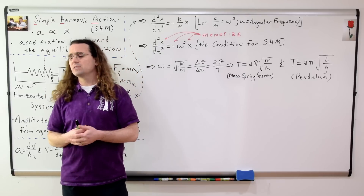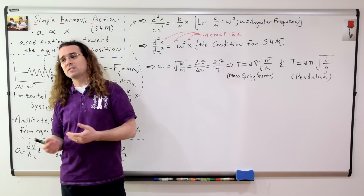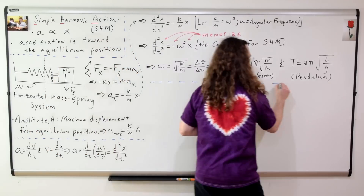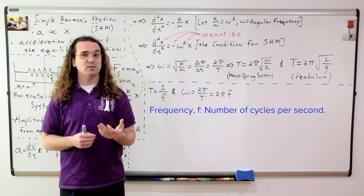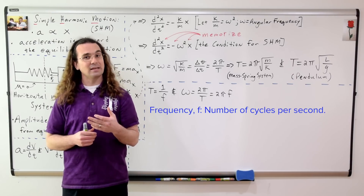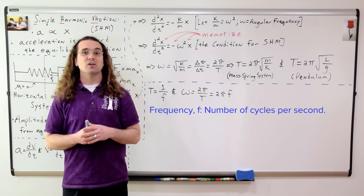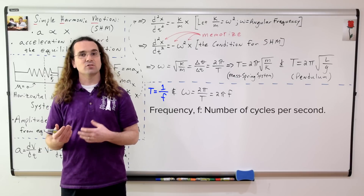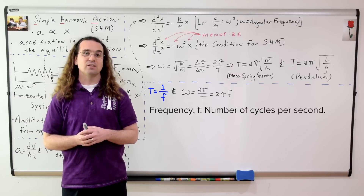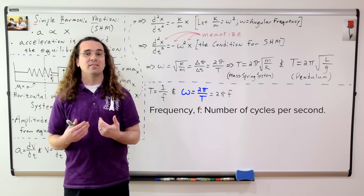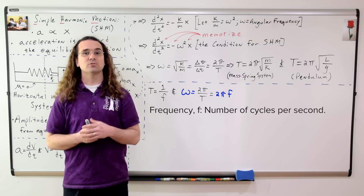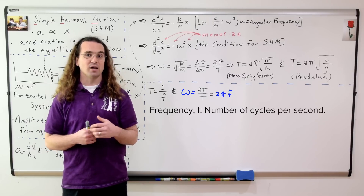Are frequency and angular frequency the same thing? No. Frequency and angular frequency are not the same thing. Frequency, or lowercase f, is the number of cycles an object goes through per second, and the frequency is equal to the inverse of the period. We've already shown that the angular frequency equals 2π divided by the period. Therefore, angular frequency equals 2π times the frequency.